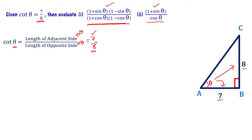The denominator of sin and cos is the length of the hypotenuse. We use the Pythagorean theorem: the square of the hypotenuse equals the sum of the squares of the other two sides. So AC square equals AB square plus BC square.